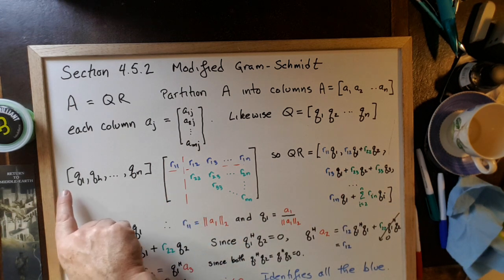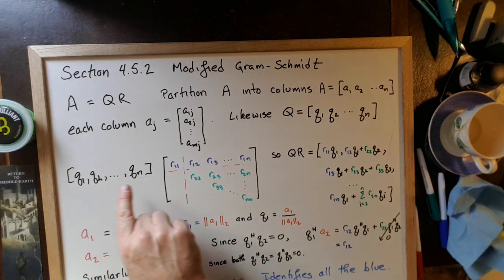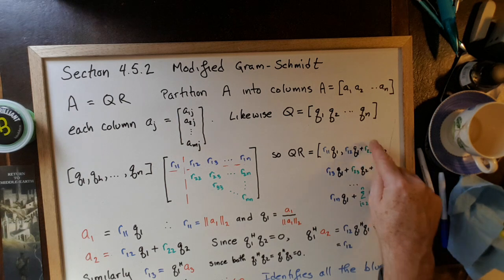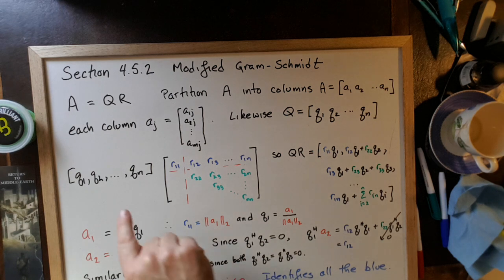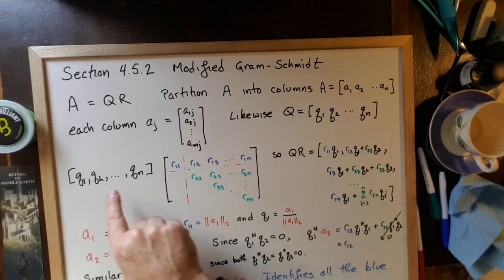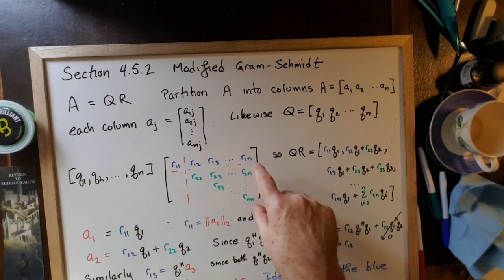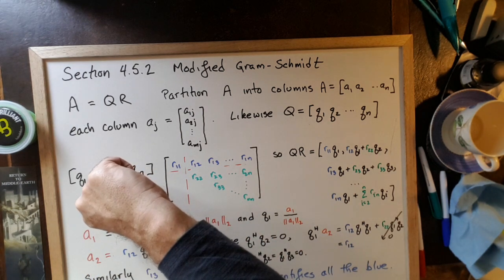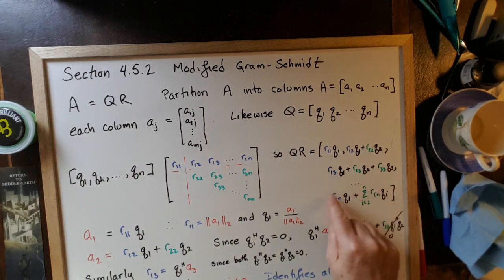The second column of the product is going to be this matrix times the second column of R. So we're going to get R1,2 times Q1 plus R2,2 times Q2. We get this linear combination of these columns. So we have exactly two columns showing up in the second column of the product. Then for the third column, we have R1,3 times Q1 plus R2,3 times Q2 plus R3,3 times Q3 showing up in the third column of the product. And so on all the way to the end where we have R1,1 times the first one plus all of these numbers times these columns. So this linear combination of these columns plus this times this one gives us our final column of QR.